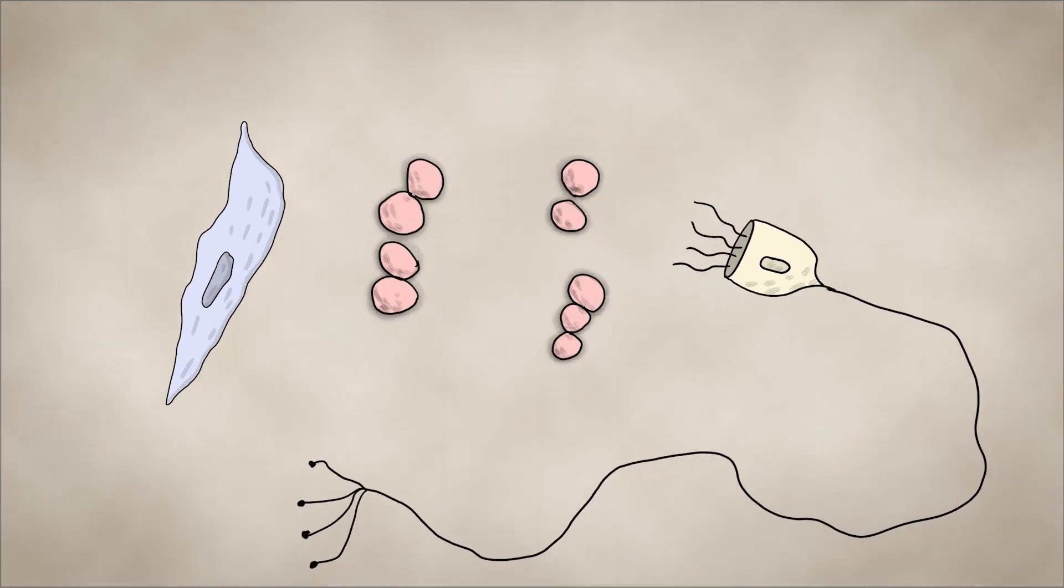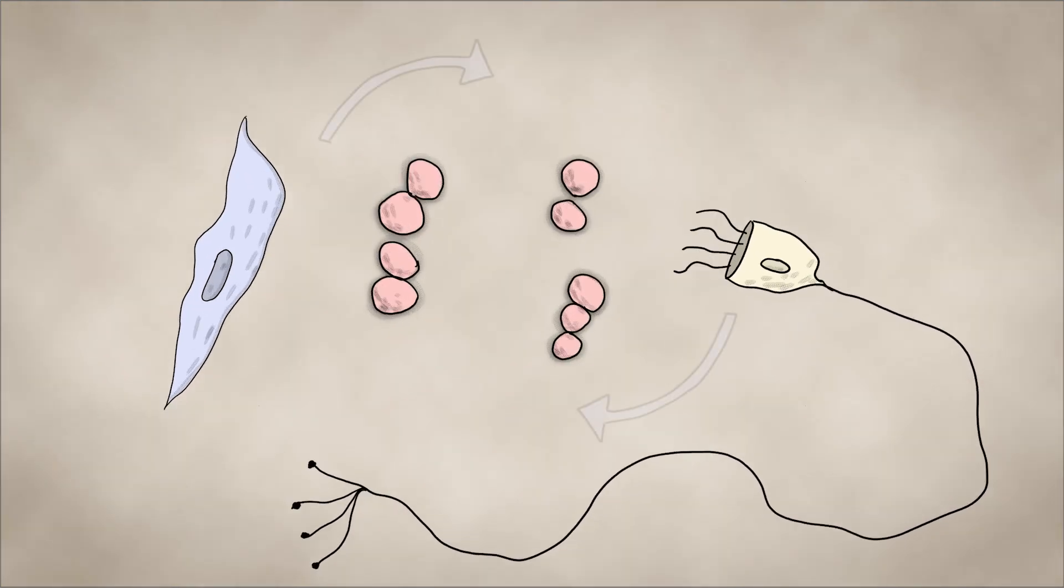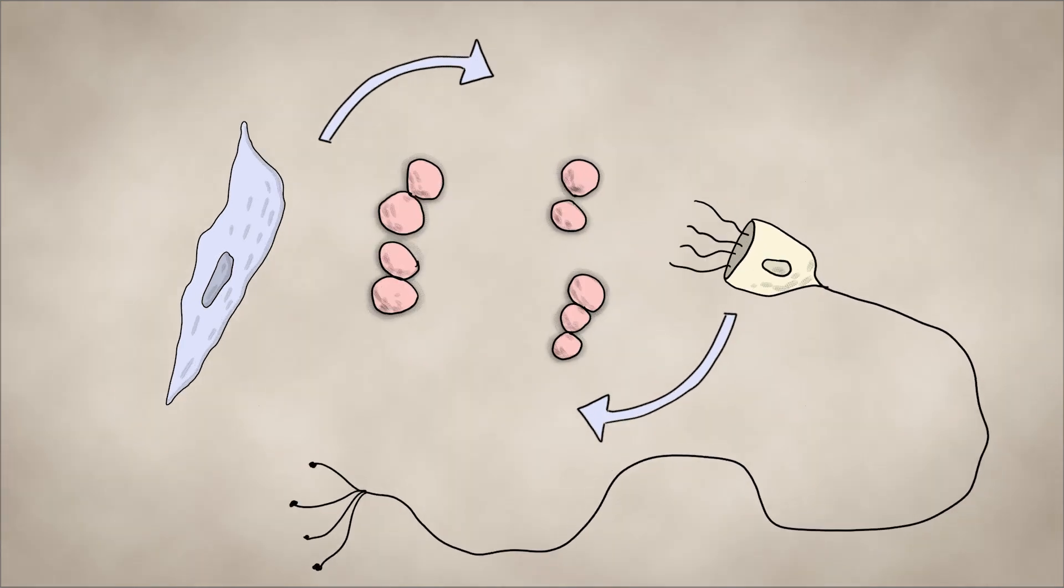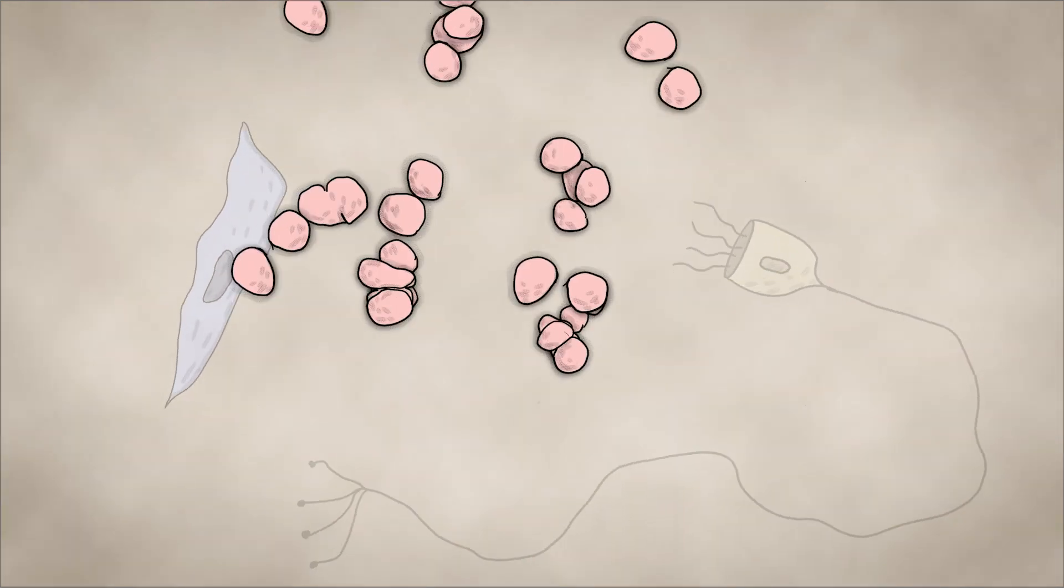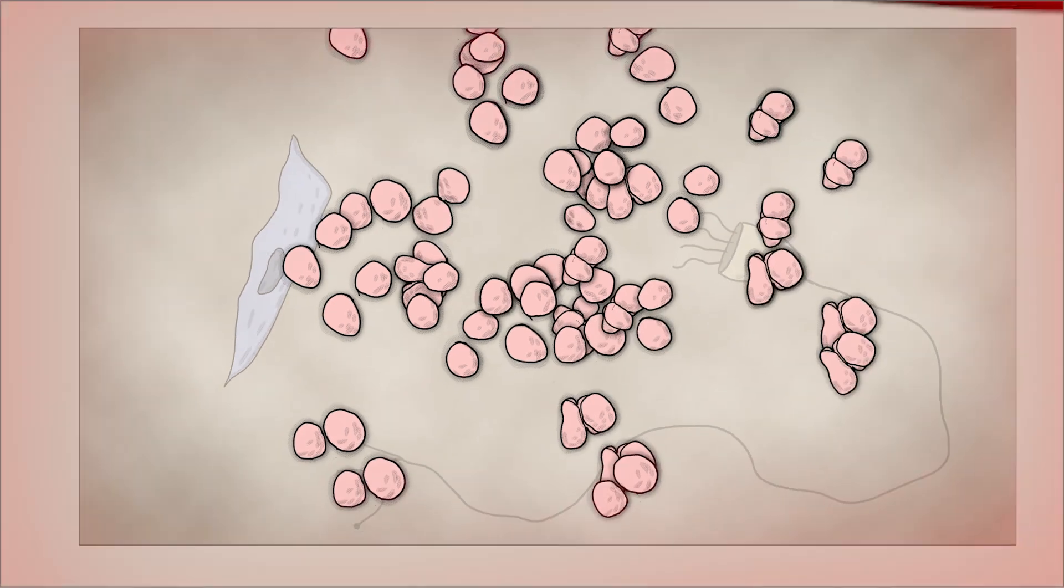In effect, the bacteria subvert the brain's immune defense by hijacking the crosstalk between nerve and immune cells, and without the immune defense, the bacteria proliferate and spread into the brain.